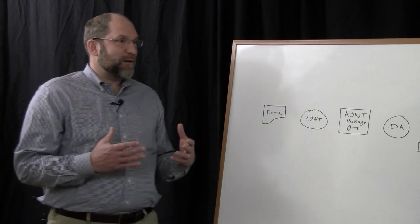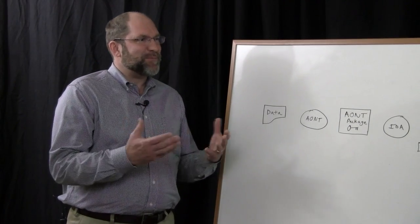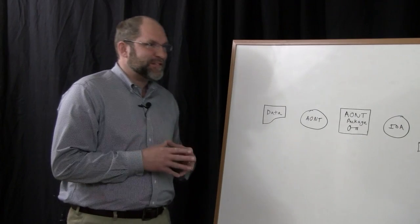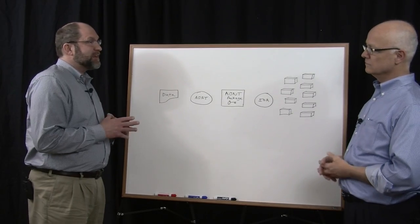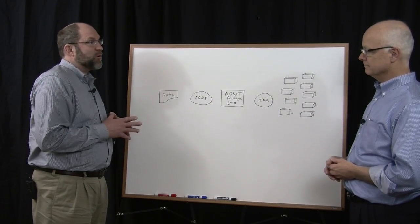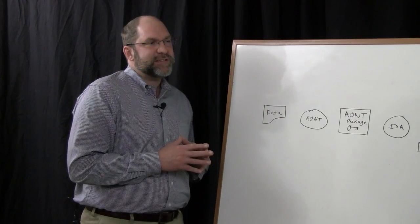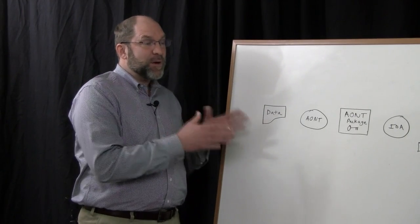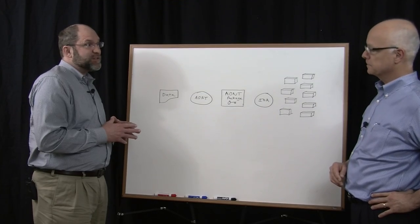Sure. Well, everyone knows how important data security is these days. All you have to do is look at a newspaper to see who's had some sort of a security breach. So in our dispersed storage network, we have a feature called Secure Slice that provides excellent data security for the data that's been stored in our system. The way it works is kind of a multi-step process that combines encryption with the information dispersal-based storage of our dispersed storage network.